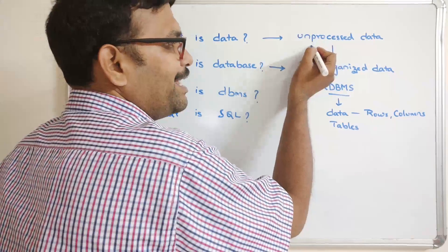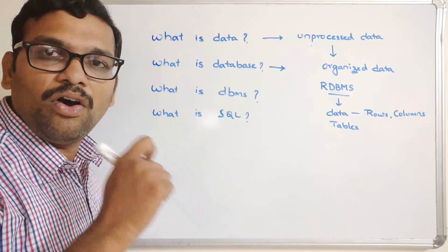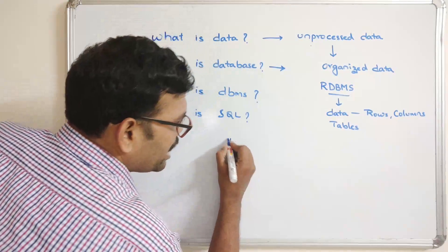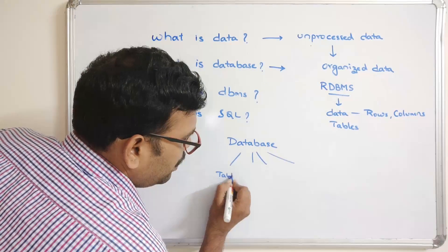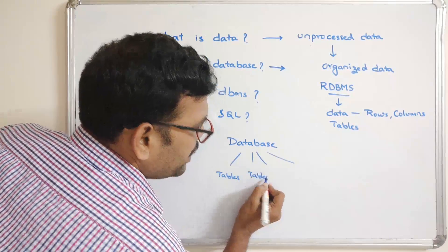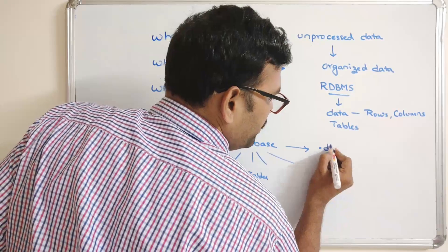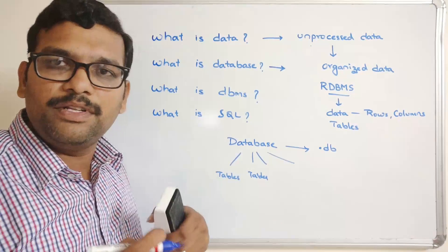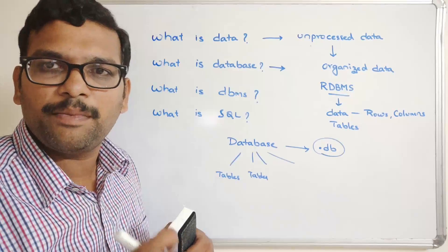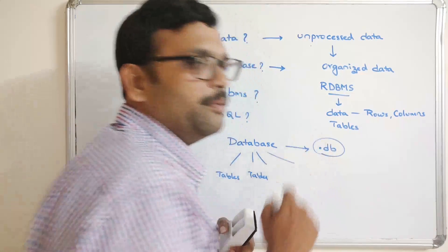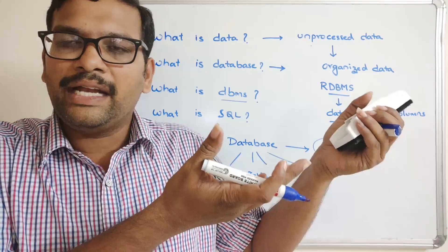Whatever unprocessed data is available, that data will be processed and stored in an organized fashion — that is what we call a database. A database can have multiple tables, so multiple data can be stored in terms of tables. The extension for a database file is .db, so all these tables are stored in a single file with that extension.